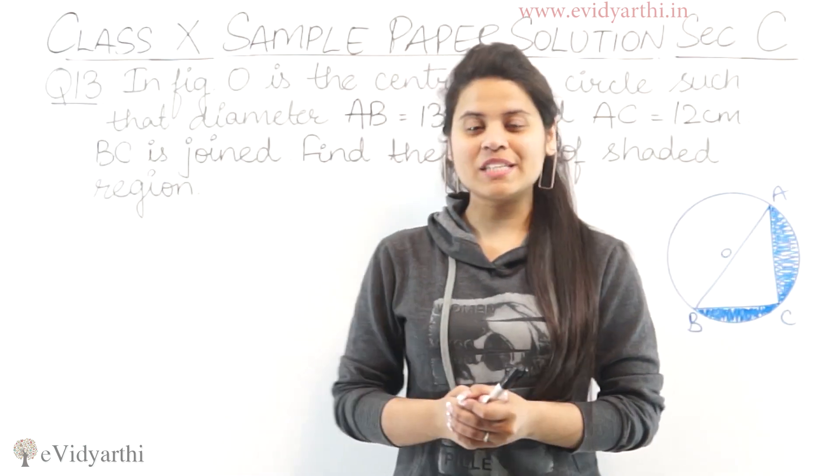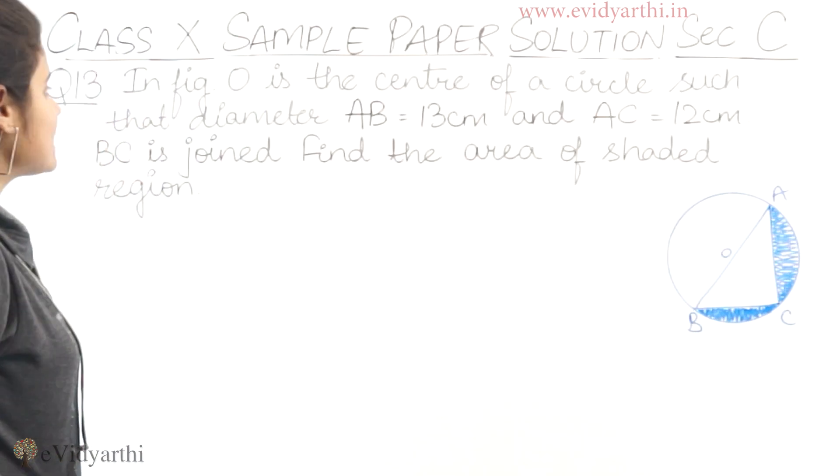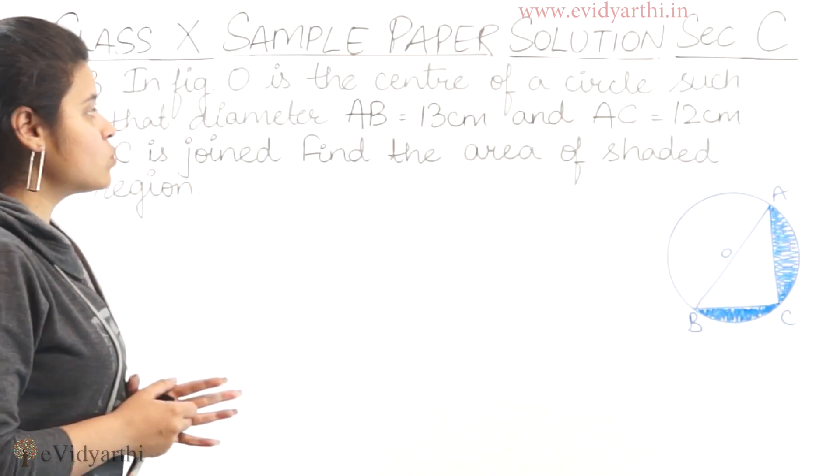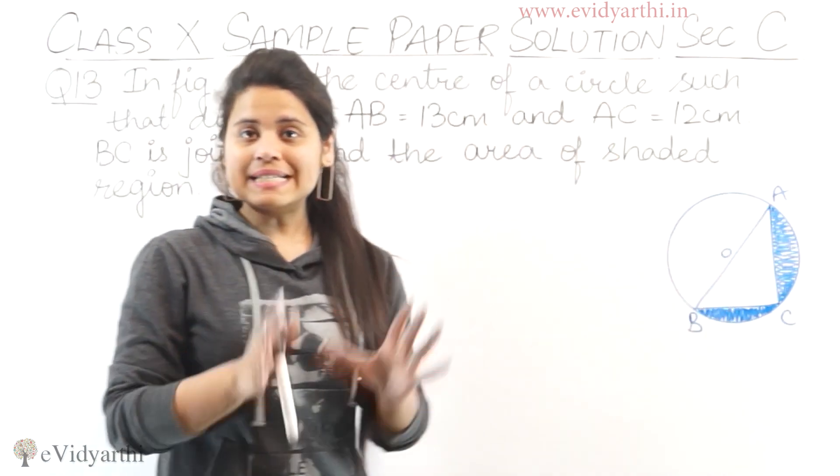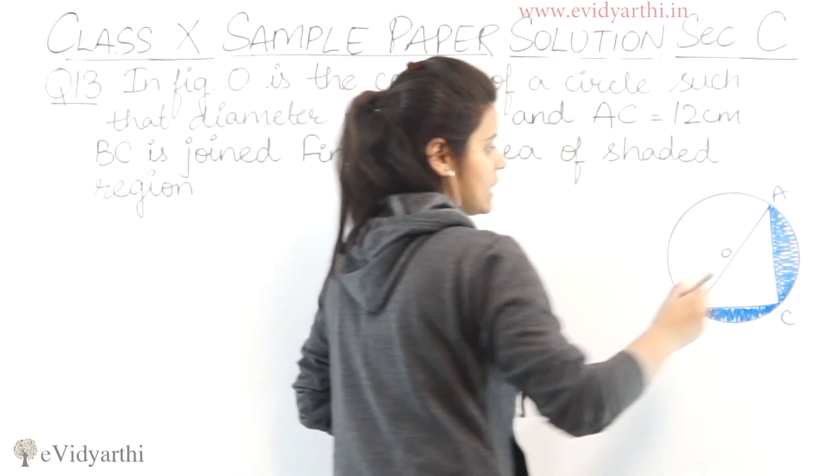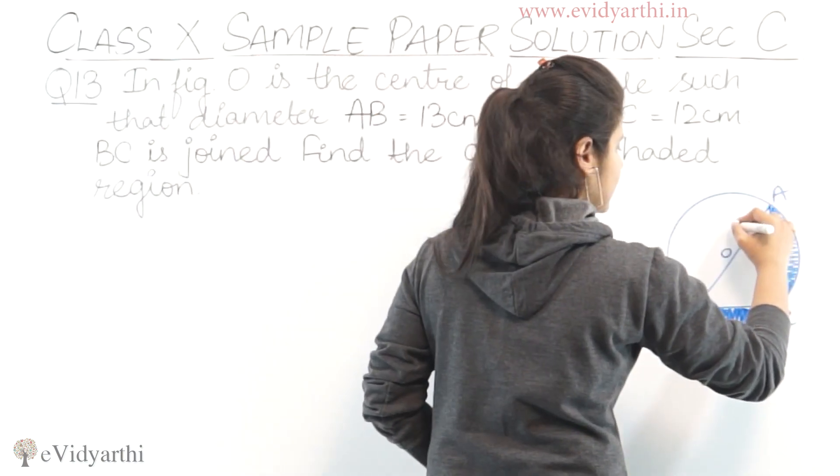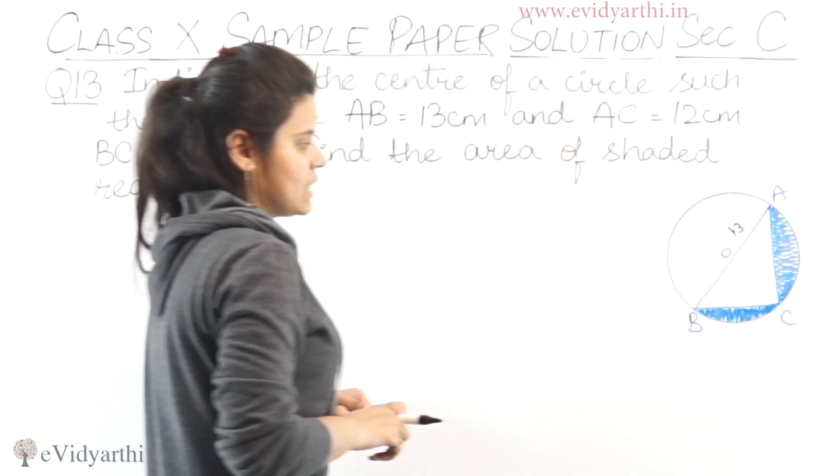Now we are beginning with Section C. This is question number 13. The question says: in the figure, O is the center of a circle such that diameter AB equals 13 cm, and AC equals 12 cm.